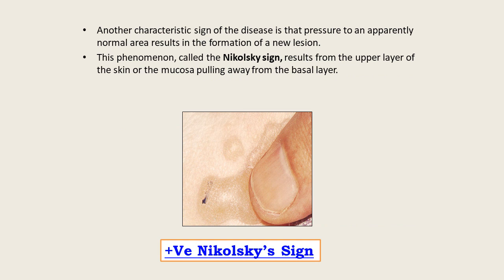Another characteristic sign of the disease is that pressure applied to an apparently normal site produces a new lesion — this is called the Nikolsky sign. When pressure is applied to a normal-appearing site on the body, formation of a new lesion occurs, making it a positive Nikolsky sign.